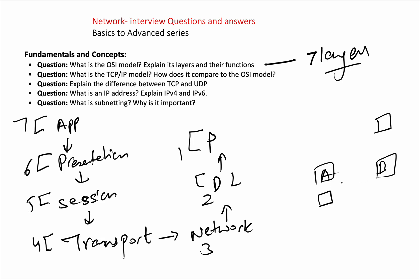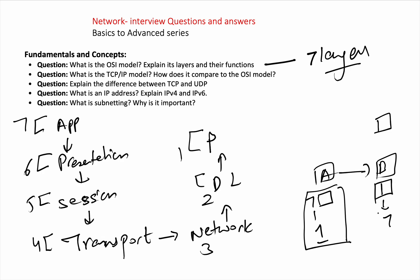The packet goes from seven to one. At the destination B, it will extract from layer one to seven — basically decapsulating the packet layer by layer. So now what does each of these layers do?